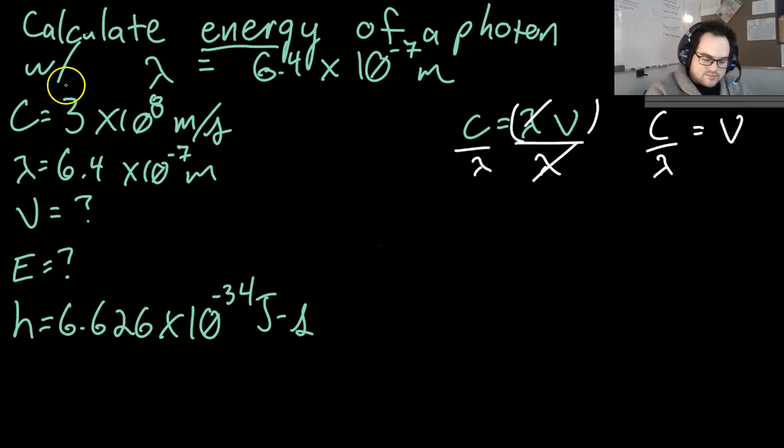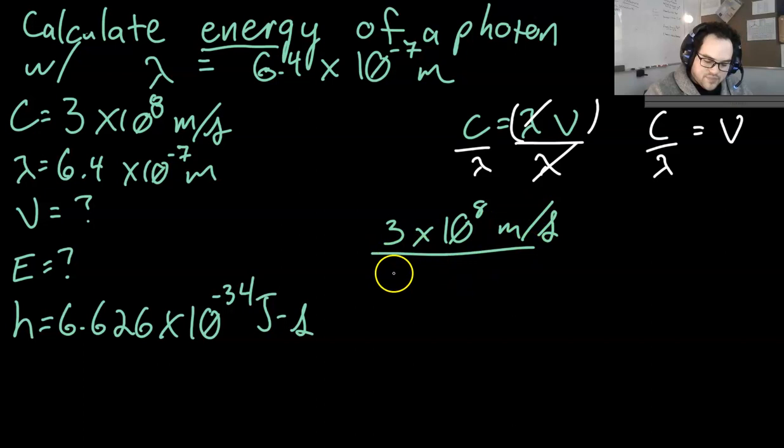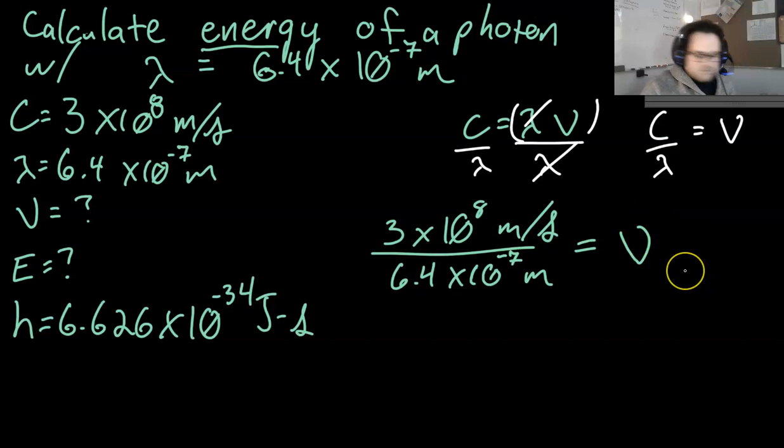So, when we plug that in, it's 3 times 10 to the 8 meters per second divided by 6.4 times 10 to the negative 7 meters and that will give us our nu, and that's going to come out to 4.69 times 10 to the 14th hertz.